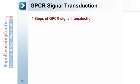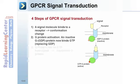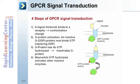GPCR signal transduction occurs in four steps. Step one: a signal molecule binds to the receptor, inducing a conformational change. Step two: G-protein activation — an inactive G-GDP protein binds GTP, replacing GDP. Step three: the G-protein has its GTP hydrolyzed, inactivating it. Step four: GTP hydrolysis activates other inactive enzymes downstream.